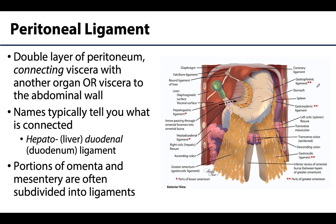Peritoneal ligaments are double layers of peritoneum that connect — and 'connect' is the key word here. They connect viscera with other organs, or viscera to the wall. They're the same thing as a mesentery or omentum but more specific in describing what is connected. These names are actually helpful in anatomy — they can often be broken down to tell you exactly which organs they connect. For example, the hepatoduodenal ligament: 'hepato' means liver, 'duodenal' means duodenum, so it connects the liver to the duodenum. These ligaments are typically just subdivisions of the larger mesenteries or omenta.